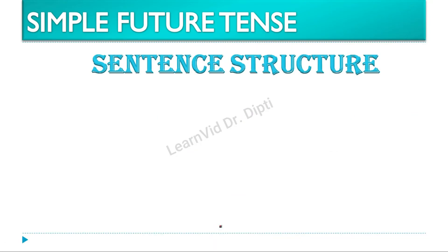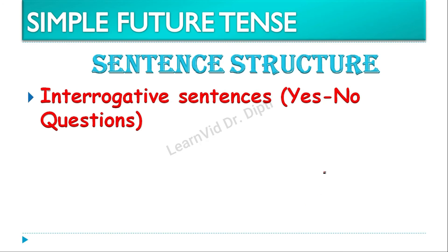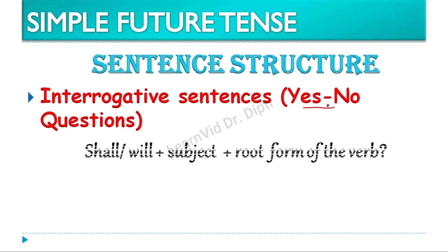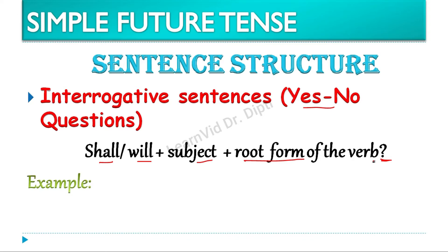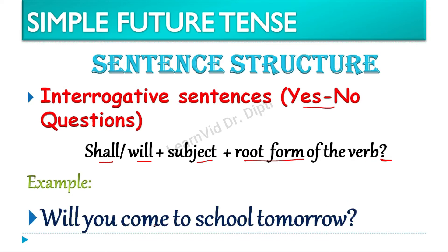Now let us move on to the sentence structures for interrogative sentences. Aur yaha par hum yes-no questions dekhenge ki kaise frame karenge simple future tense mein. Iska jo rule hota hai — pehle hum shall and will lagate hain, and then comes the subject, and then the root form of the verb, and in the last a question mark will be placed. Example: Will you come to school tomorrow? Toh yaha par shuruaat kari hai will se, phir uske baad subject, then root form of the verb, then question mark.